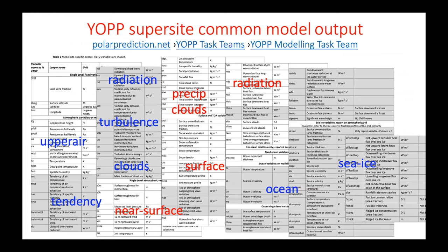This slide from Gunilla Sunson shows the kind of variables available from all the different models. One emphasis here is we're not just talking about the atmosphere — we're talking about the whole system: the ocean, the sea ice, land. One of the most interesting process studies we're going to be doing over the next few years will address the coupling processes between all these different models.